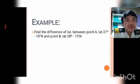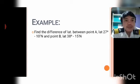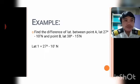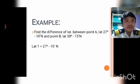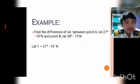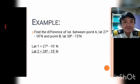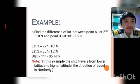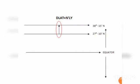Next, find the difference of latitude between 27 degrees 10 minutes north and 38 degrees 15 minutes north. The value of the place of origin is less than the place of arrival, so the vessel is going in a northerly direction. Since they are in the same hemisphere, subtract: 15 minus 10 is 5 minutes, and 38 minus 27 is 11 degrees.